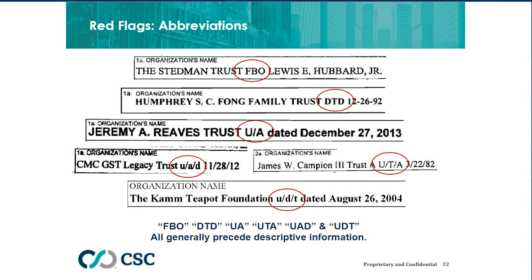Other red flags include abbreviations such as 'FBO' (for the benefit of), 'UAD' (under trust agreement dated), 'under agreement dated' — a lot of different abbreviations find their way into trust-related debtor names. All of these generally precede information intended to either specify the particular trust or distinguish the trust from others. None of these belong in a name field typically. The only time they would go in a name field is if the organic record specifies them as part of the trust's name. If it's not specified in the organic record, it doesn't belong in the name field.